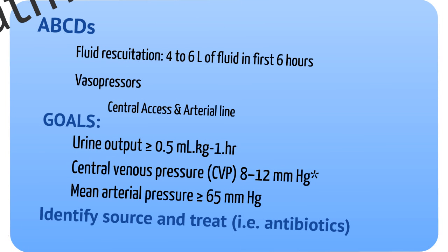Once fluid resuscitation has occurred and the patient is stabilized, the next step is to identify the source of the sepsis and treat that source. You can identify the source by obtaining blood cultures and undergoing imaging. Always consider other etiologies for septic shock — for example, cardiogenic shock can lead to hypotension and appear just like a sepsis picture. Included in the treatment of sepsis is broad-spectrum antibiotics. One possible combination would be vancomycin, Zosyn, and azithromycin as broad-spectrum coverage.